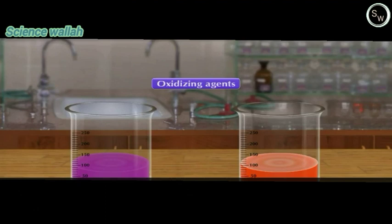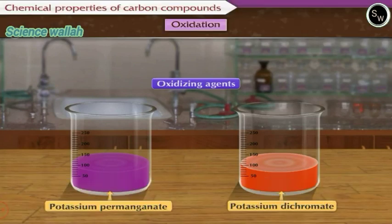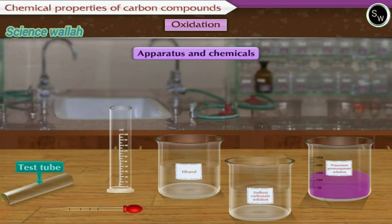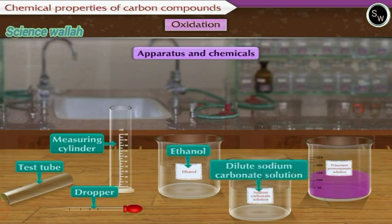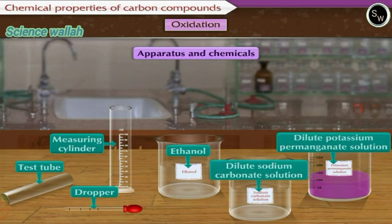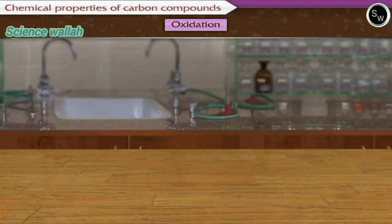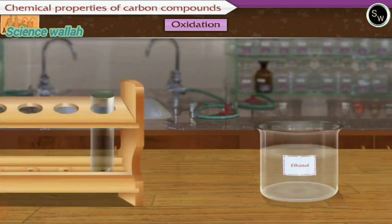To learn more about oxidation, let us perform an activity. Let us first see the apparatus and chemicals required to perform this activity: test tube, measuring cylinder, dropper, ethanol, dilute solution of sodium carbonate, and dilute solution of potassium permanganate. Come, let us perform the activity.